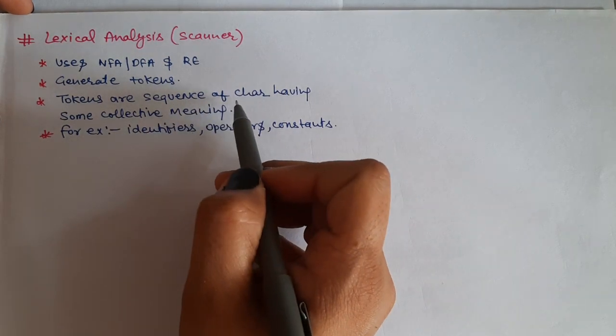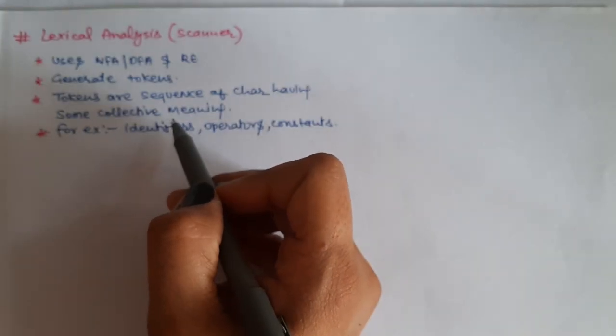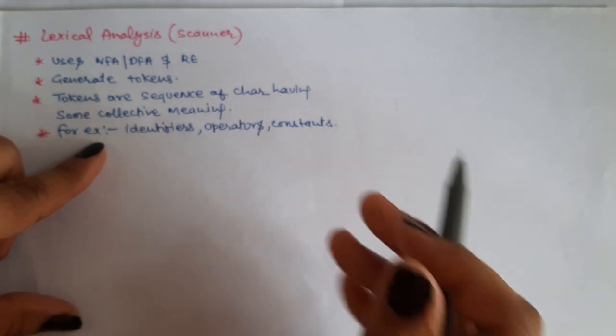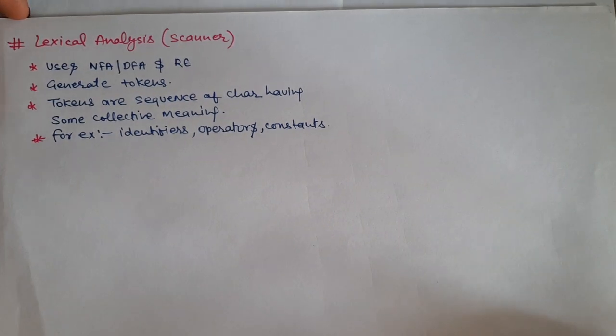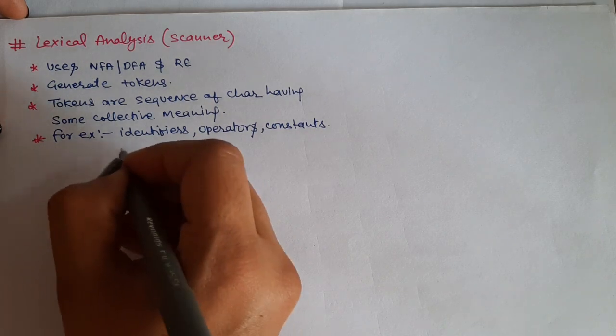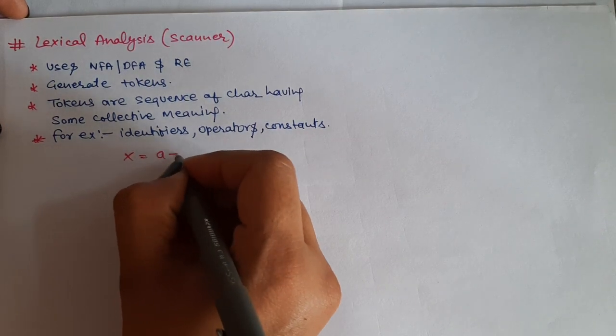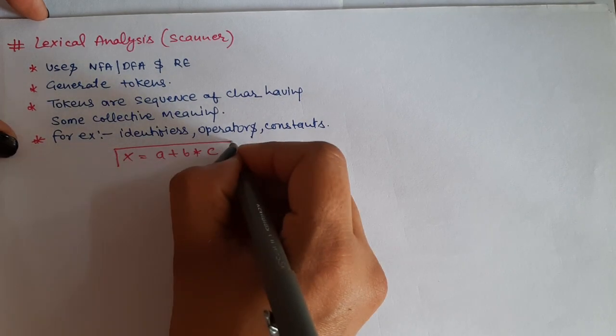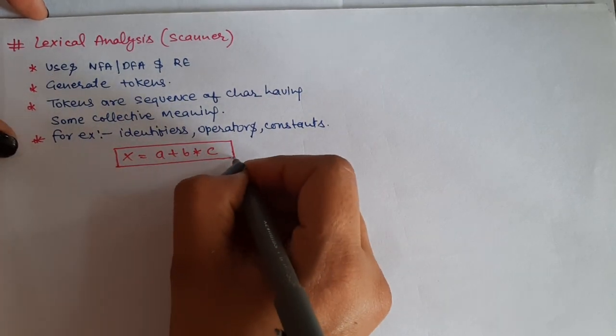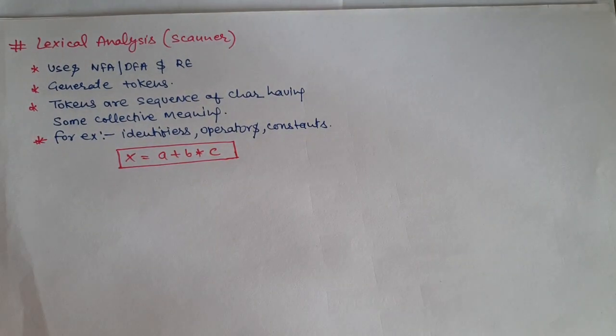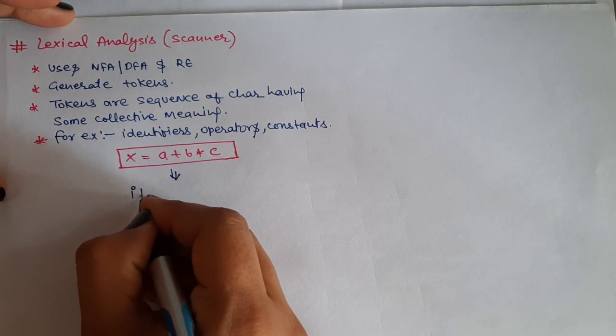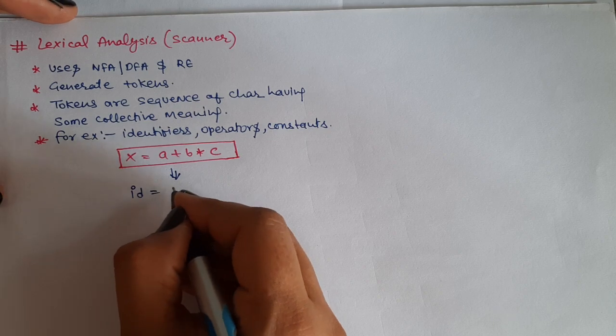The tokens have a sequence of characters which have a logical meaning, like identifiers, operators, constants, etc. Let's understand from an example. Suppose x is equal to a plus b star c. This is our program. So what is the lexical analysis phase? You will convert this statement into various tokens.